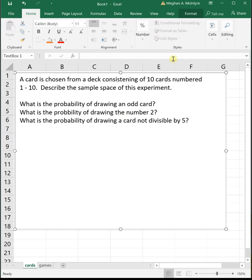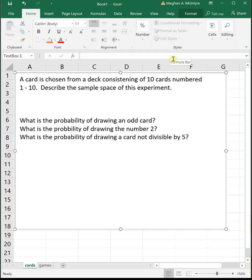Well, the sample space tells us everything that could happen, and we typically list it in squiggly brackets. So if we've got 10 cards that are labeled 1 through 10, our sample space would be a card number with the number 1, 2, 3, 4, 5, 6, 7, 8, 9, and 10.